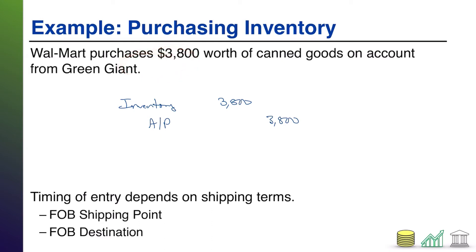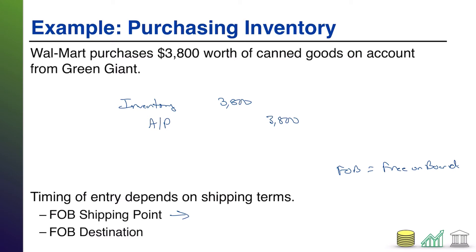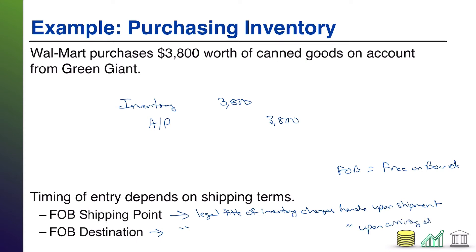Notice I don't have a date on here, and that's because I want to talk about timing. The timing of making this entry depends on the shipping terms associated with the purchase. There are two shipping terms you might see: FOB shipping point and FOB destination. FOB stands for free on board — you don't need to memorize that acronym. What matters is: FOB shipping point means the legal title of the inventory changes hands upon shipment. FOB destination means legal title of the inventory changes hands upon arriving at the destination.